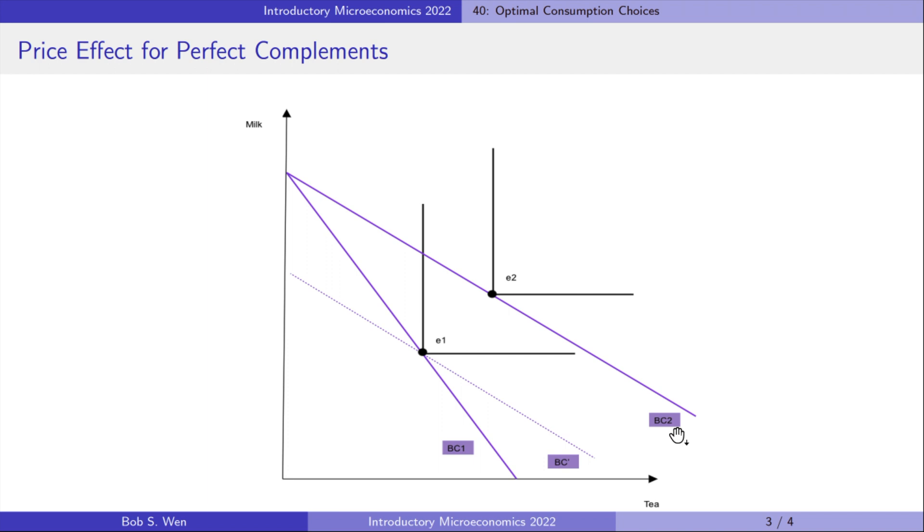We can decompose it into the substitution effect and income effect. So we draw an imaginary budget line that is parallel to the new budget line and through the initial optimal consumption bundle E1.